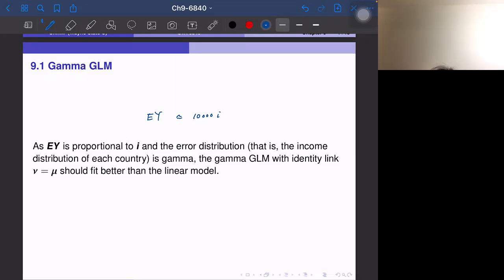So in that sense, this is probably the Gamma GLM with identity link. The η is equal to μ. Sorry, this is the η. η equals μ should fit better than the linear model.